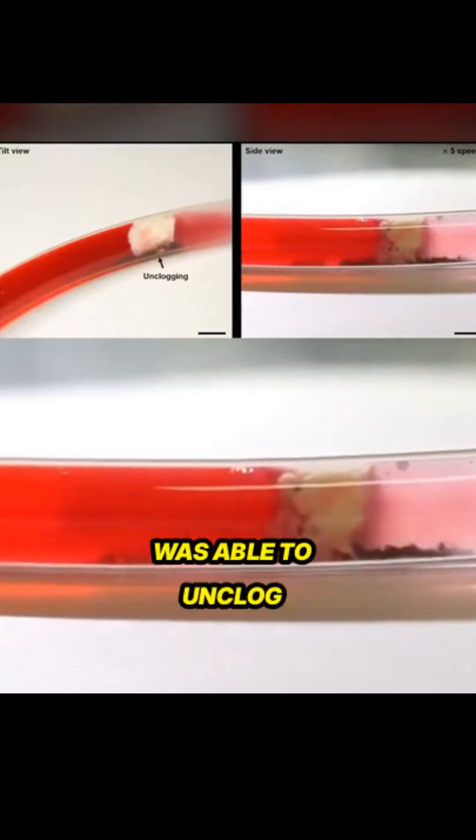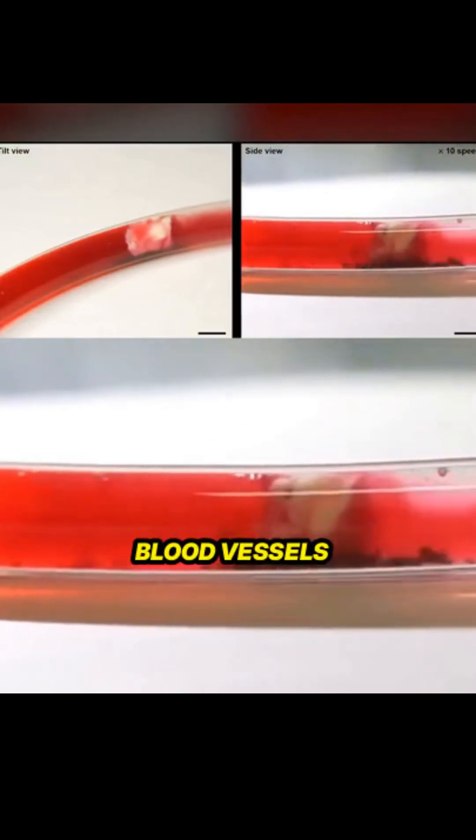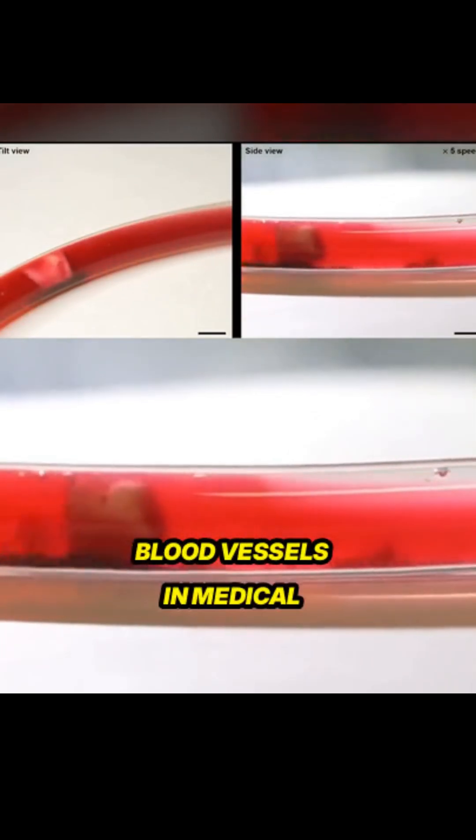The micro-robot swarm was able to unclog tubes that resembled blocked blood vessels. This technology could potentially be used to clear plaques from clogged blood vessels in medical treatments.